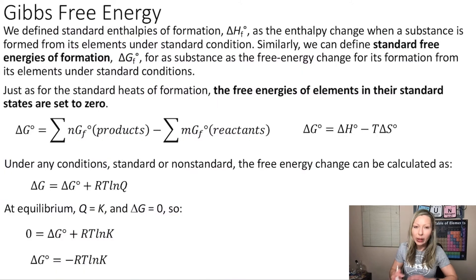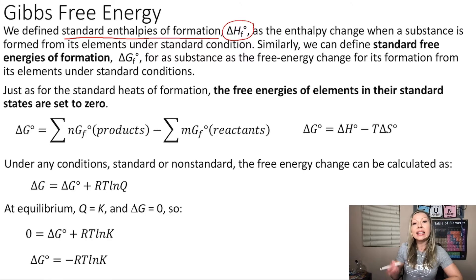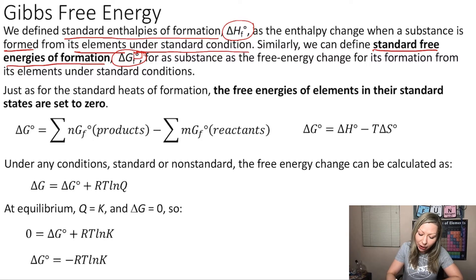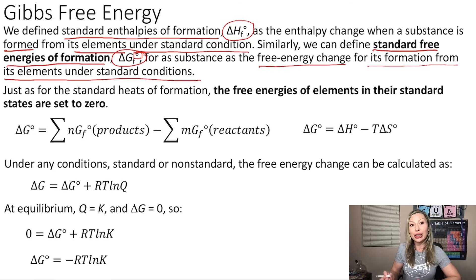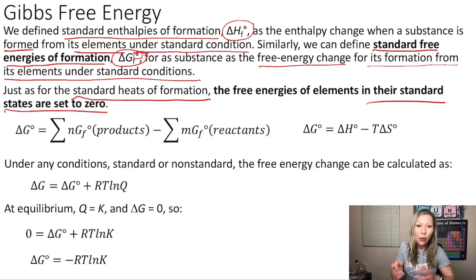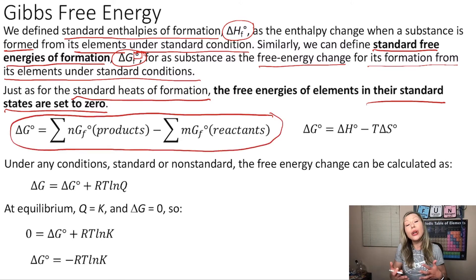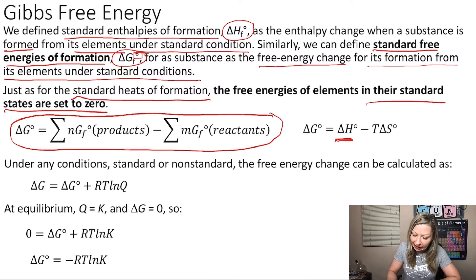There are a couple of other ways to calculate the Gibbs free energy. We defined the standard enthalpies of formation, or ΔHf, as the enthalpy change when a substance is formed from its elements under standard conditions. Similarly, we can define the standard free energies of formation, or ΔGf°, as the free energy change for a substance's formation from its elements under standard conditions. The free energies of elements in their standard states are also equal to zero, and we can use the same formula substituting ΔH formations for ΔG formations. We can also calculate ΔG° using standard enthalpy change and standard entropy change.